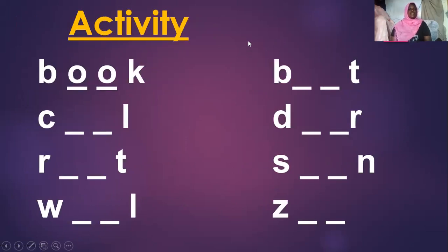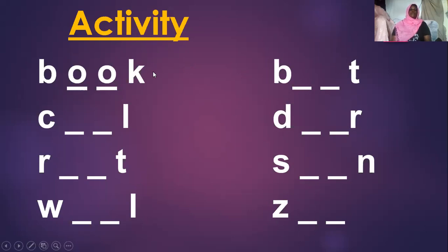This is the exercise — you are going to fill in double O. We have done the first one for you: book. The rest you are going to do in your books. Thank you, I'm teacher Alice. Bye!